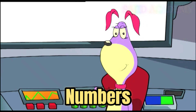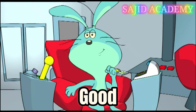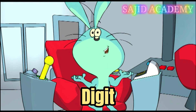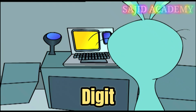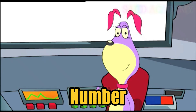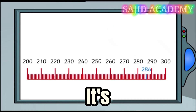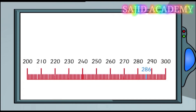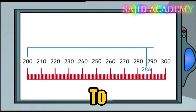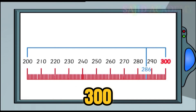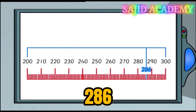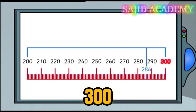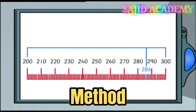But what about numbers that are more than 100? Good point. Once we get to 100, we begin using three-digit numbers. Think of a three-digit number — any number. 286. It's more than 200, but less than 300. But which is it nearer to — 200 or 300? 286 — it's got to be nearer 300.